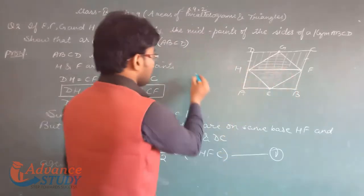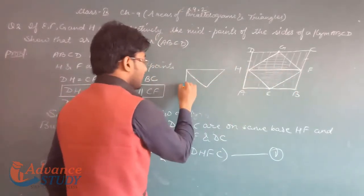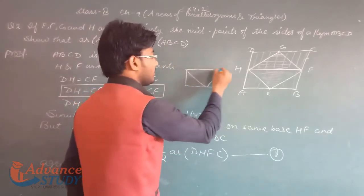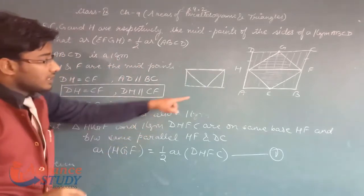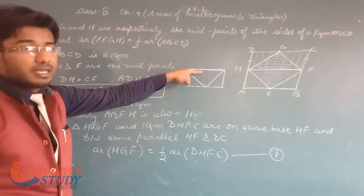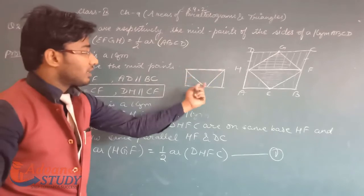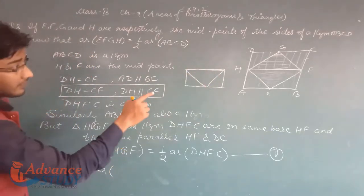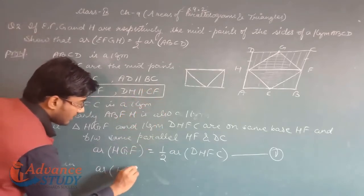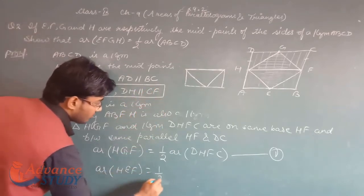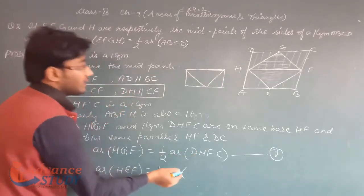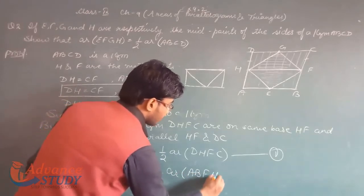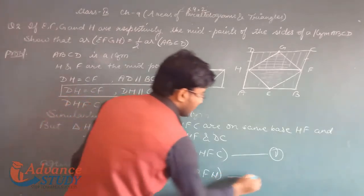Similarly, triangle HEF and parallelogram ABFH share the same base HF and lie between the same parallel lines. Therefore area of triangle HEF = 1/2 area of parallelogram ABFH. This is equation number 2.